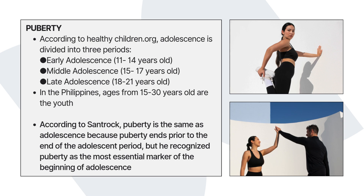Girls reach puberty earlier than boys and they experience menarche — the first menstrual flow. Boys have spermachy, which is the first ejaculation or wet dream that a boy experiences, and it marks the start of puberty. Puberty is a brain neuroendocrine process occurring primarily in early adolescence that triggers the rapid physical changes that occur in the adolescent stage of human development.